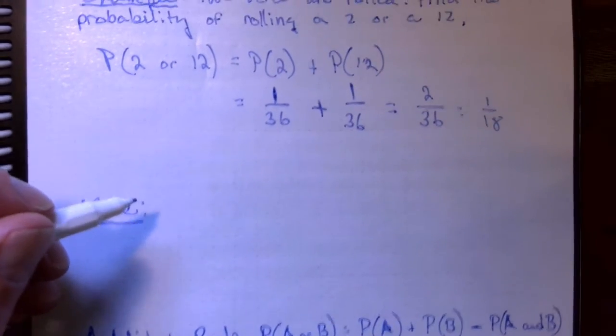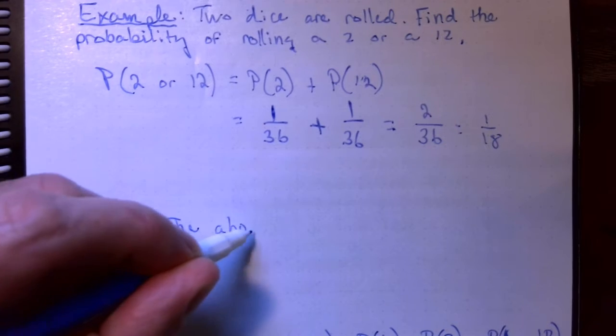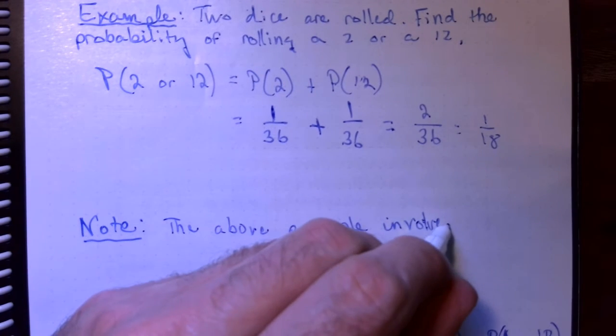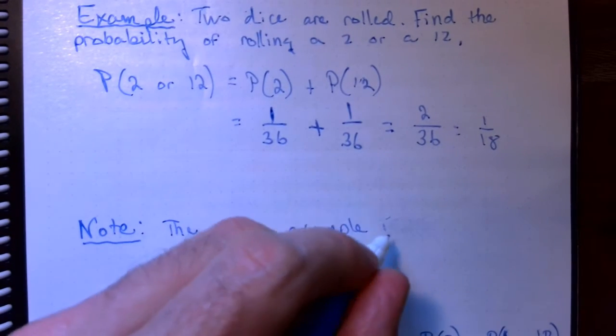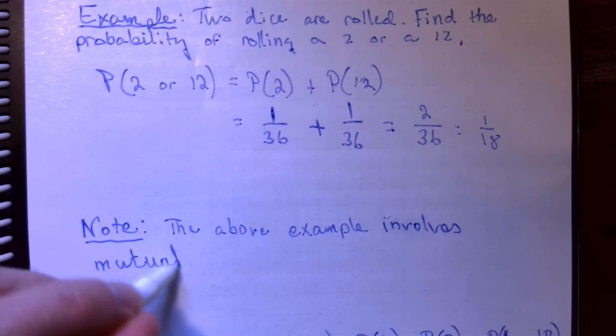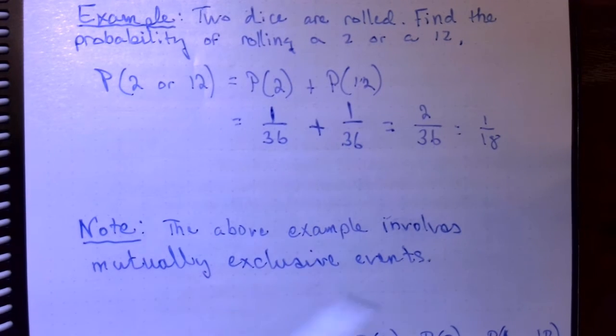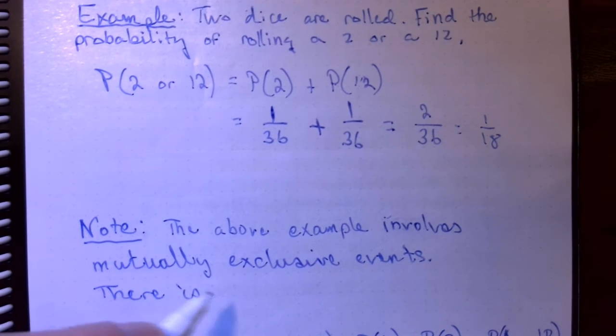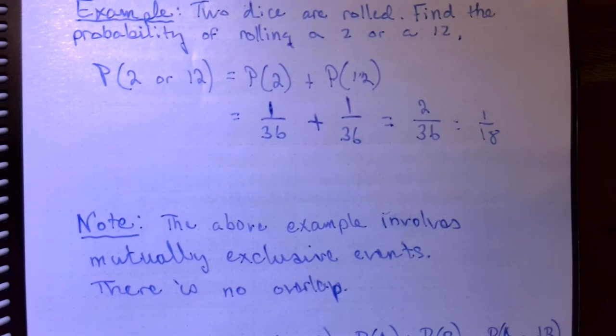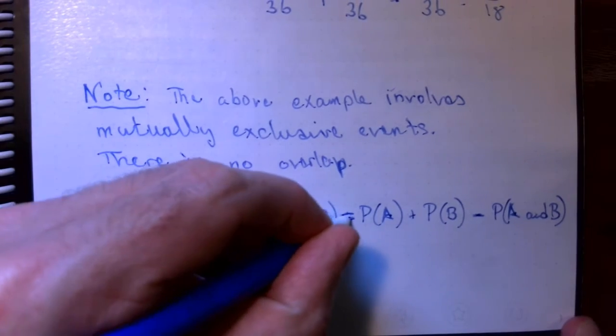Now, this example here was kind of a special case. The above example involves mutually exclusive events, and there is no overlap. When I say mutually exclusive events, I mean there's no way those two things can happen at the same time. This is the general formula that we need here. This is the general addition rule.